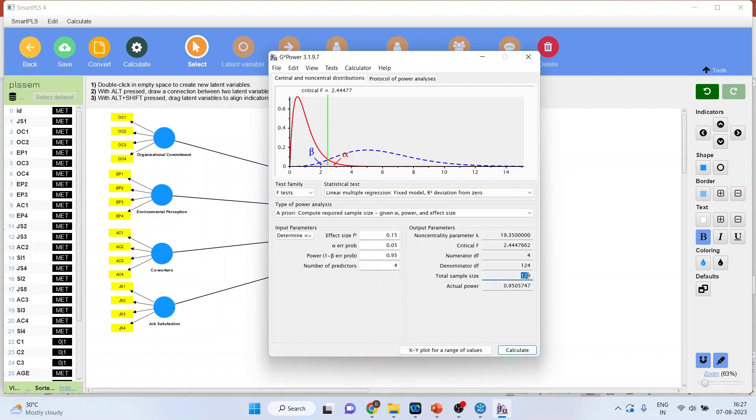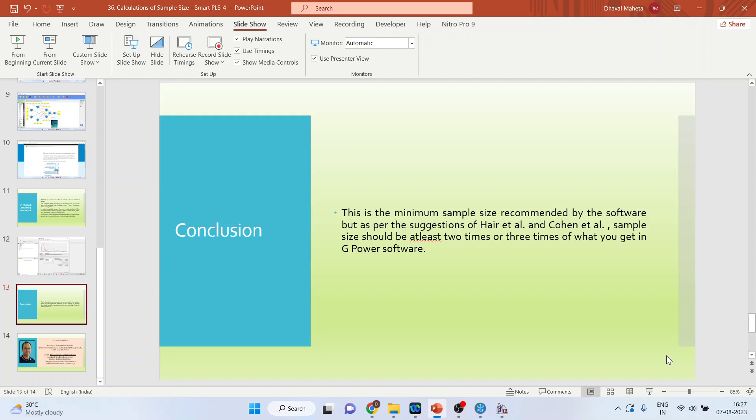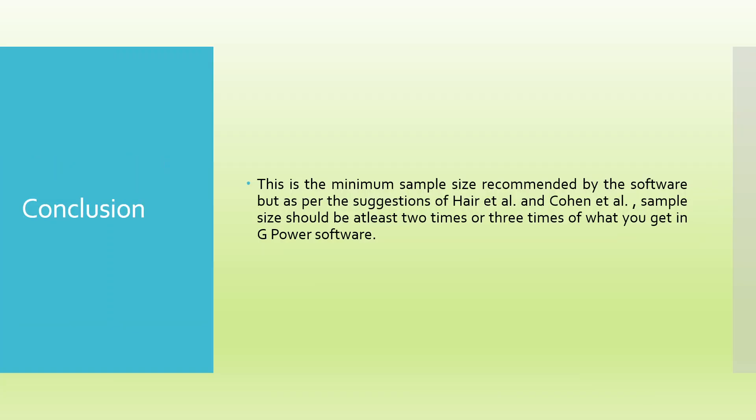So I got the sample size 129. You can see here, 129. So this is the minimum sample size required recommended by the software. But as per the suggestions of Hair et al. and Cohen et al., sample size should be at least 2 times or 3 times of what you get in G-Power software.